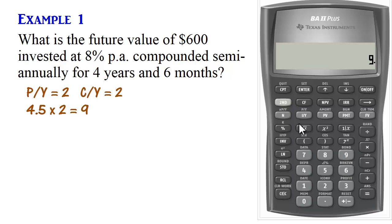Basically, we will have 9 total compounding periods in 4.5 years. The interest rate per annum, 8%, is entered by pressing I/Y. So we press 8, I/Y.